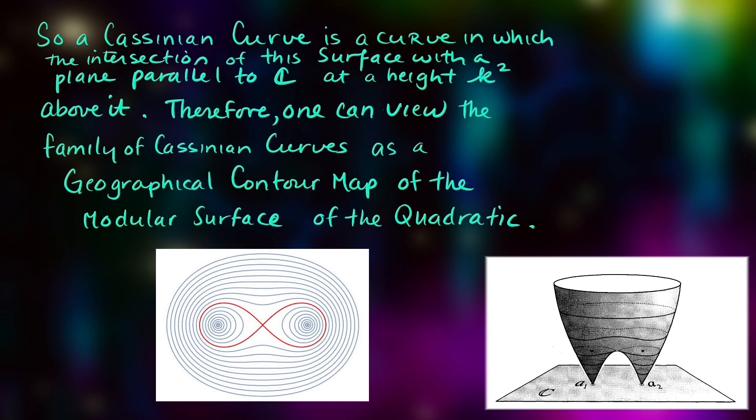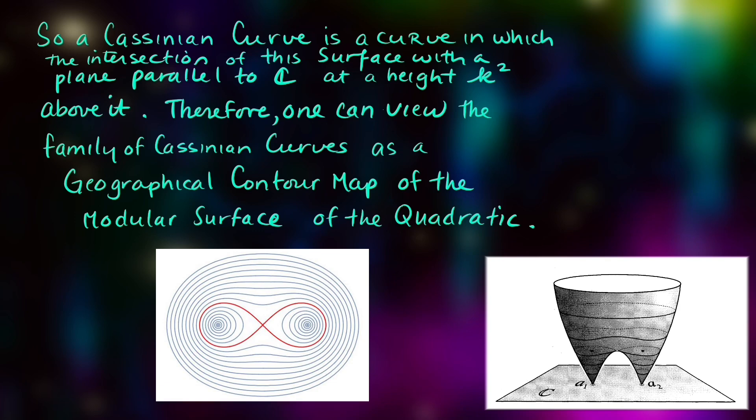So a Cassinian curve is a curve in which the intersection of the surface with a plane parallel to the complex plane at a height k squared above it will produce a particular Cassinian curve. It is a basic geographic contour map of the modular surface produced by the quadratic.